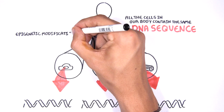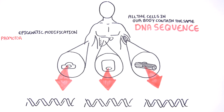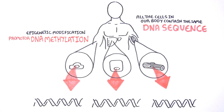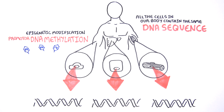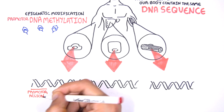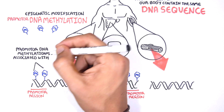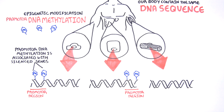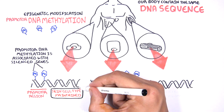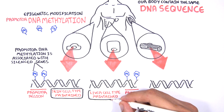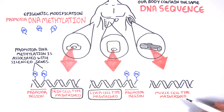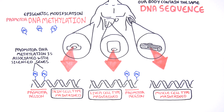One of these epigenetic modifications is DNA methylation. Promoter DNA methylation is associated with gene silencing and plays an important role in maintaining cell types. In cancer, DNA methylation patterns are altered and disrupted.